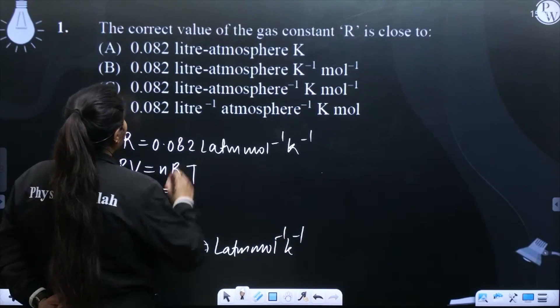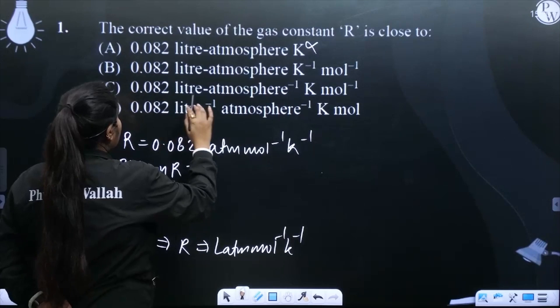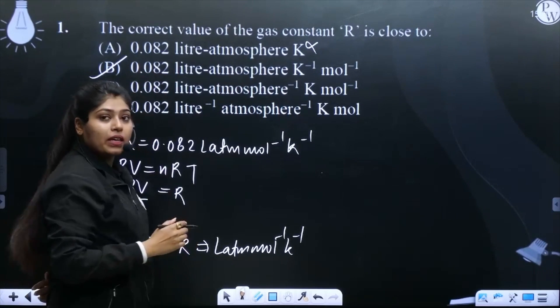So which option will be correct? The first one, no, it is incorrect. The second says 0.082 liter atm per kelvin per mole. So option B will be correct.